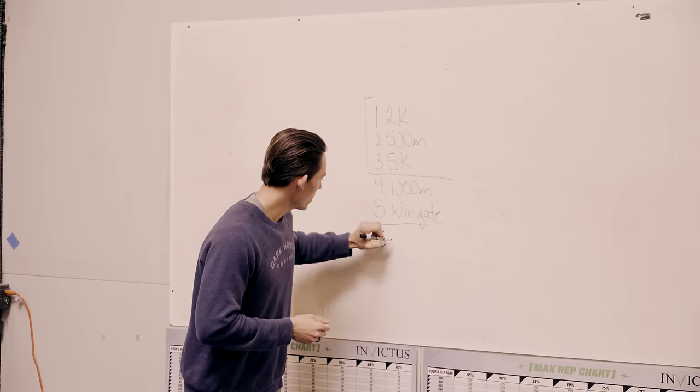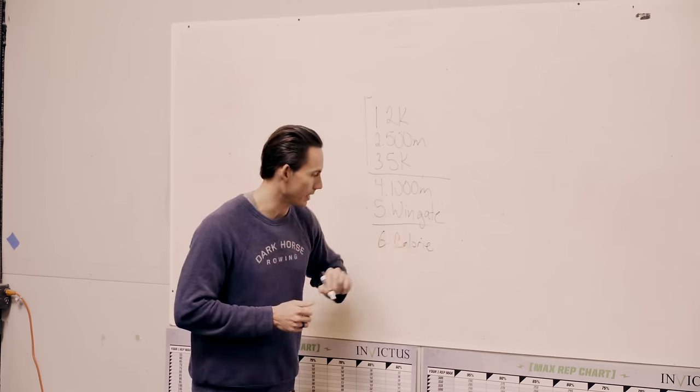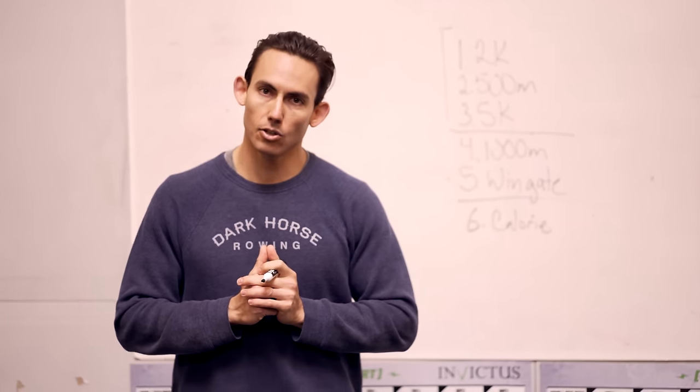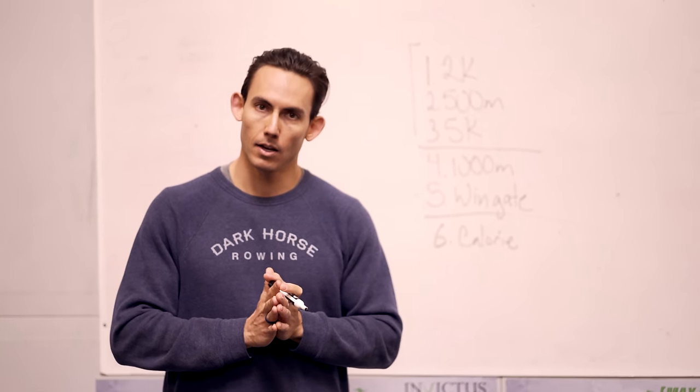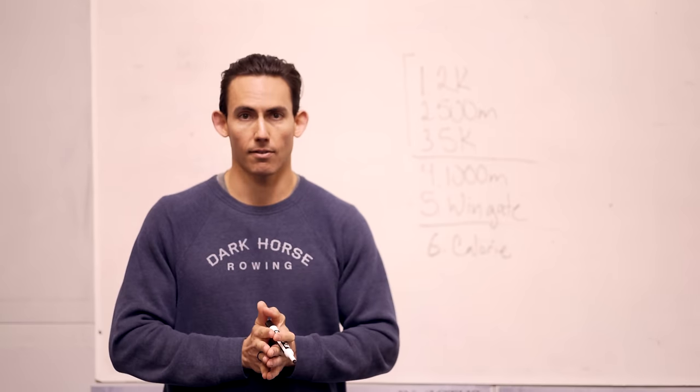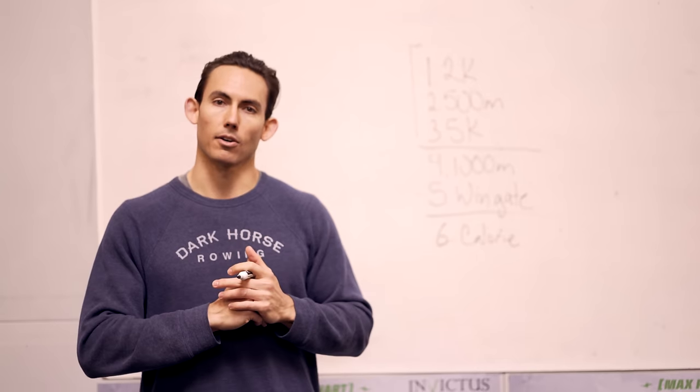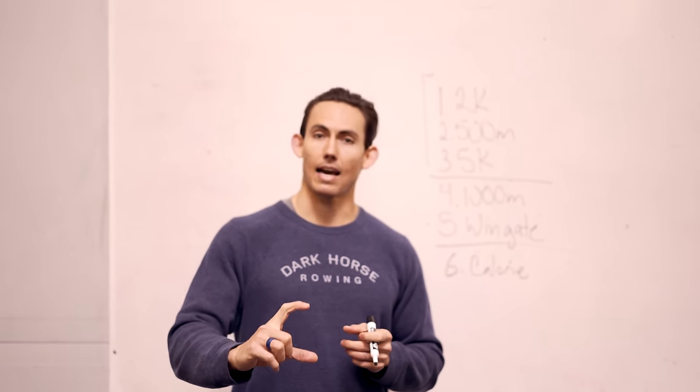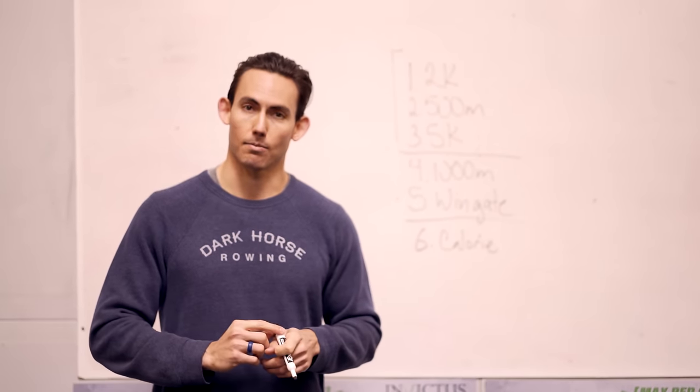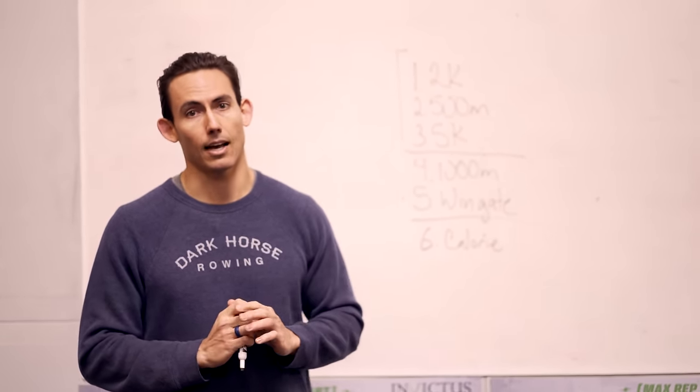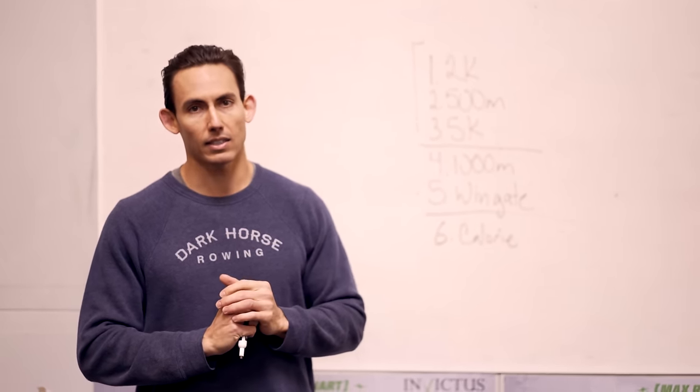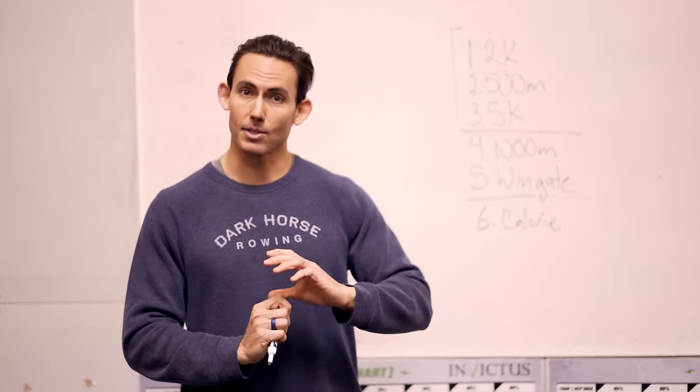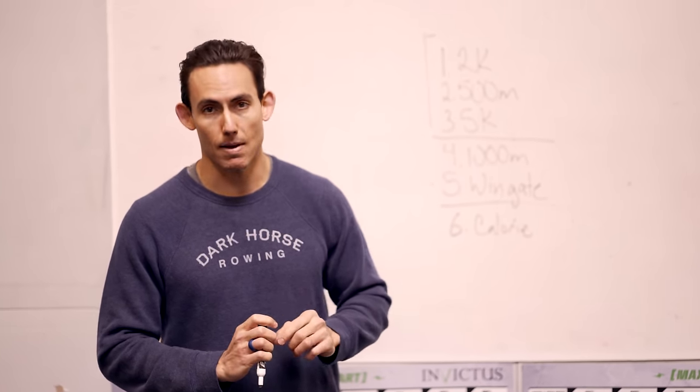After that, number six, we like to get into calorie. Using calories as a test. So one of our favorites is to run 60 calories for time, rest as needed until you feel fully recovered, and then you are going to program the monitor for the exact amount of time it took you to complete 60 calories, and then see how many calories you can get in that amount of time. So it's a two-part test, 60 calories for time, rest as needed. We like about 10 minutes, and from there you are going to row the time it took you to row 60 calories, and see how many calories you can row in that time. It's an excellent mental test.